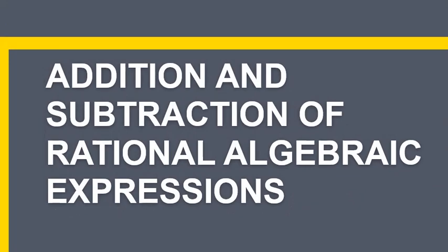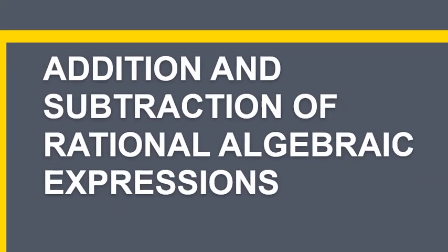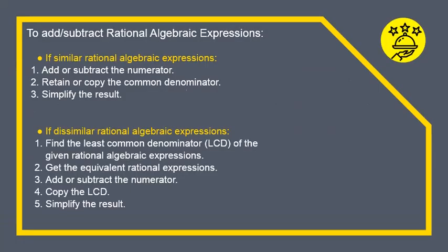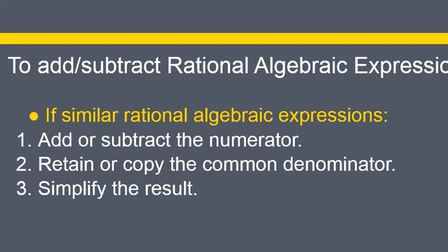Addition and subtraction of rational algebraic expressions. In adding or subtracting similar rational algebraic expressions, first, change the rational algebraic expression into similar algebraic expressions using the least common denominator or LCD. Then, proceed as in adding similar fractions. Here are the steps: if similar rational algebraic expressions, first, add or subtract the numerator. Then, retain or copy the common denominator. Then, simplify the result — make it in its simplest form.